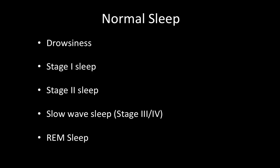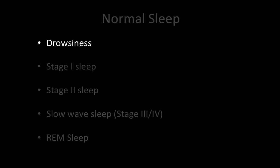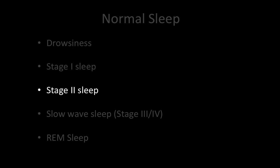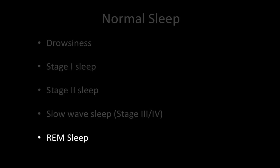In this video, we will review EEG in normal sleep. Specifically, we will look at different stages of normal sleep and the components of each, including drowsiness, stage 1 sleep, stage 2 sleep, slow wave sleep, and REM sleep.